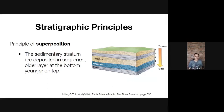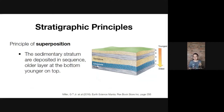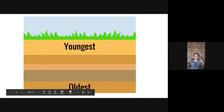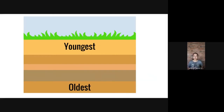Next is the Principle of Superposition, which tells us that different layers are deposited in a sequence, and the older layers are found at the bottom while younger ones are found at the top. Looking at our layers — sandstone, limestone, and shale — based on superposition, shale is the oldest, limestone is next, and sandstone is the youngest. Remember: oldest layer at the bottom, youngest layer at the top.